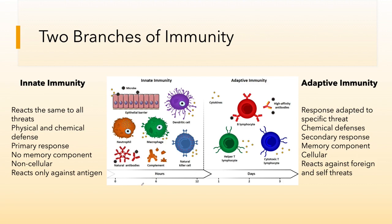The innate immune system reacts to all threats the same way. It will always do the same thing over and over again, no matter what type of antigen it is, whether it's a virus or a bacterial cell. It consists of both physical and chemical defenses. Some of those defenses are carried out by cellular responses, but it is considered an acellular immune response. It is the first response in immune reactions.